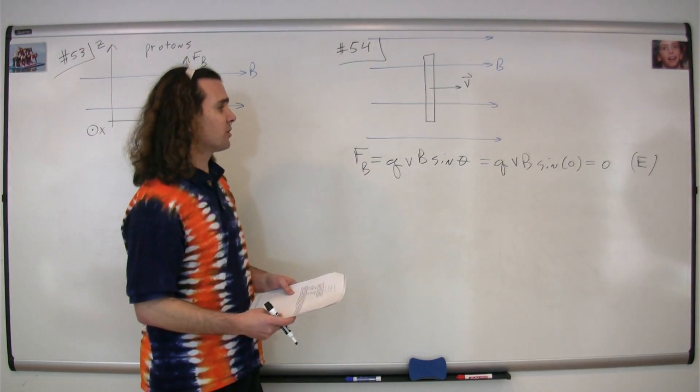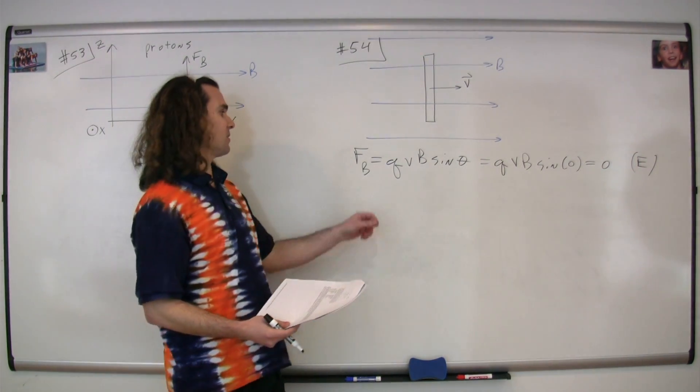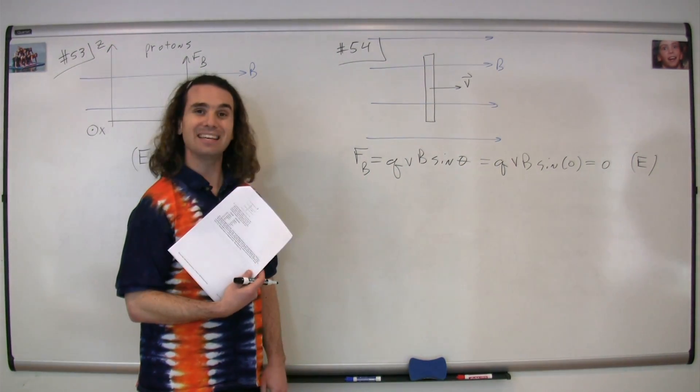And the sine of zero is zero, so the correct answer is that the magnetic force is equal to zero. Correct answer is E.